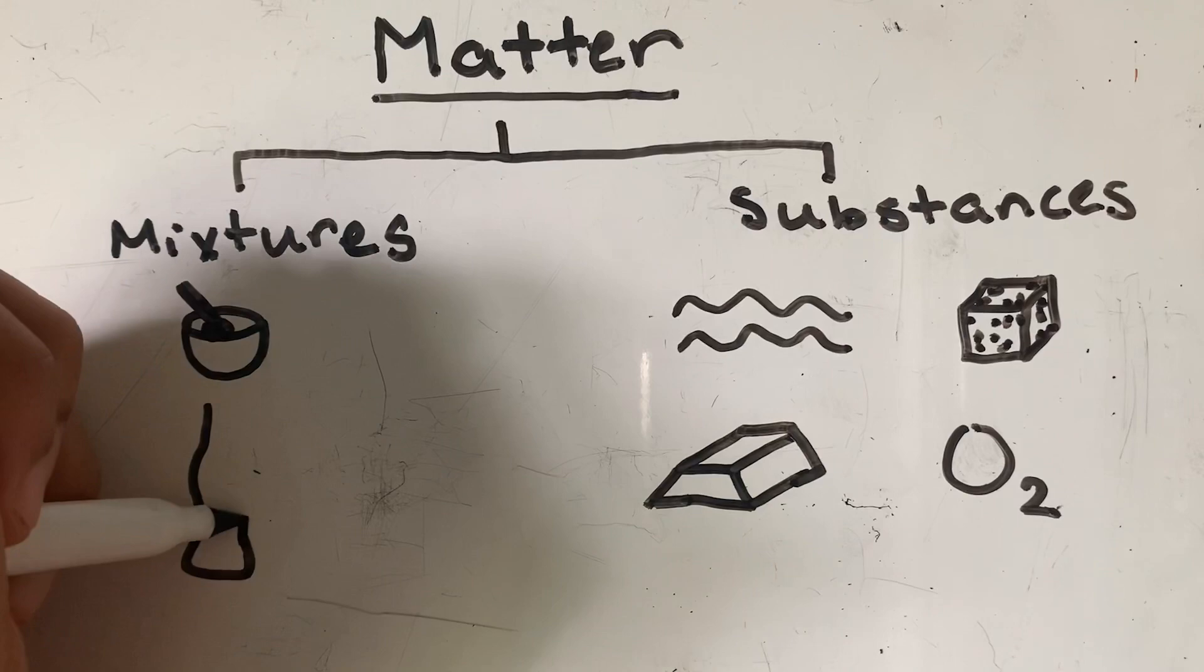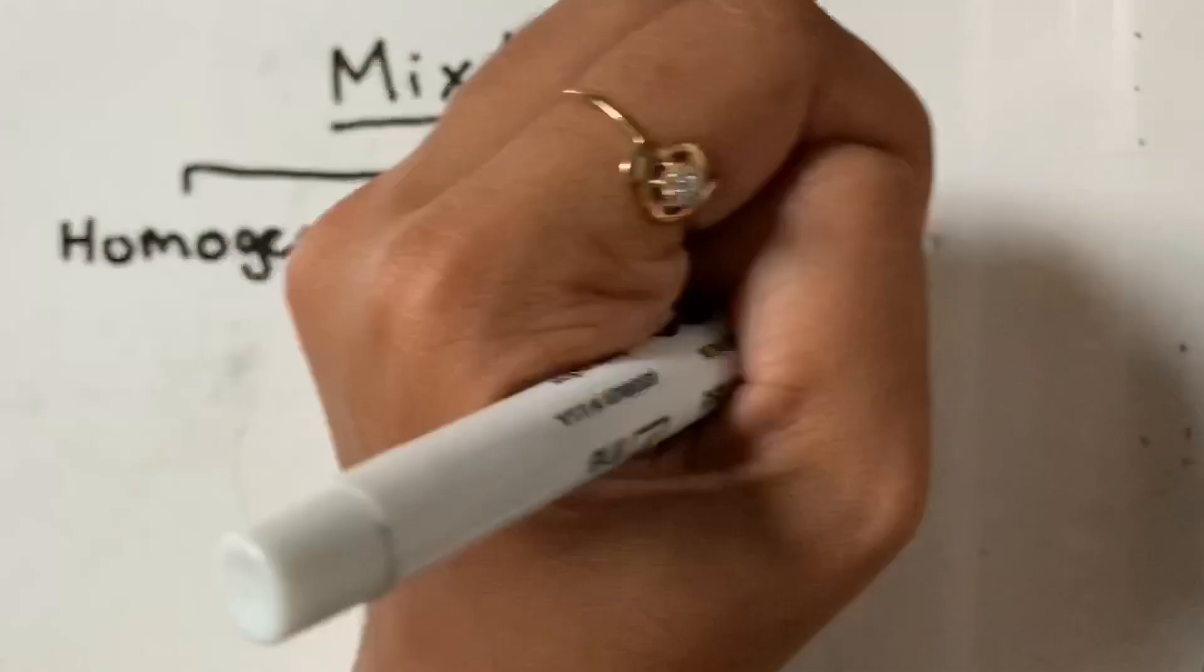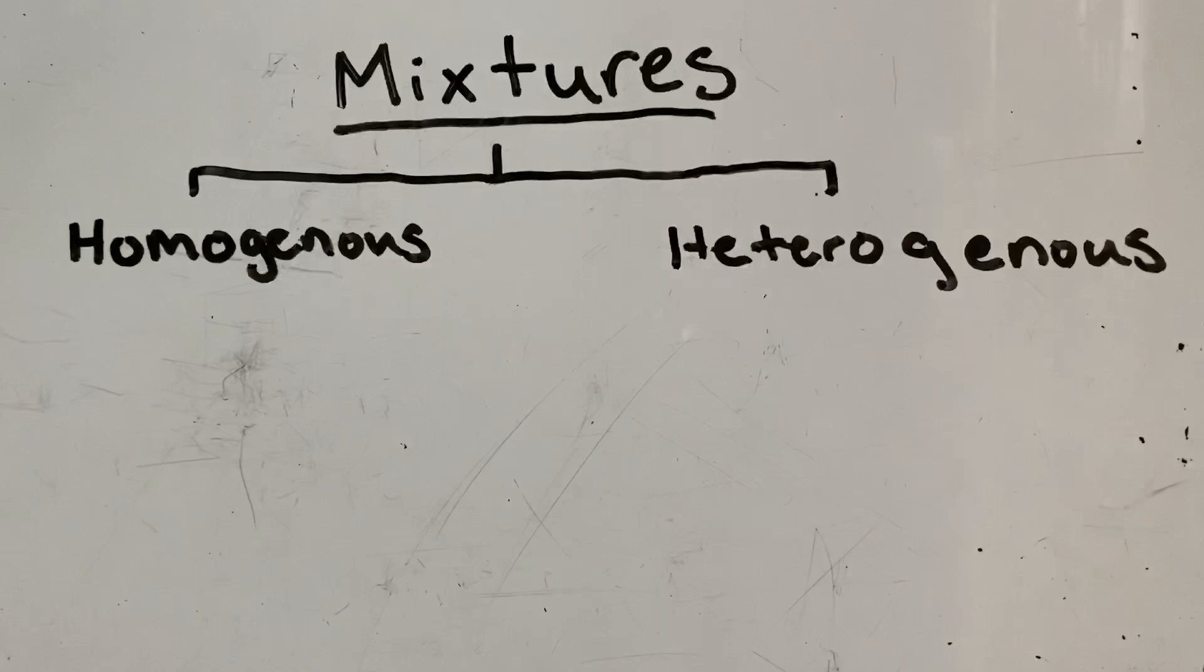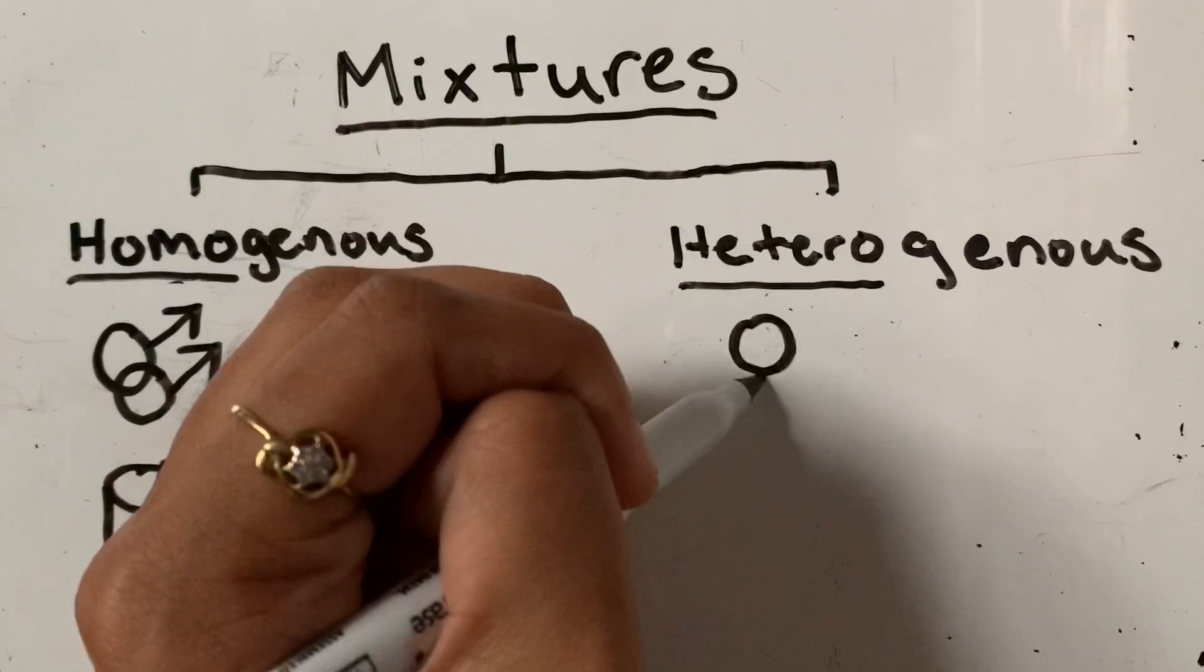Mixtures can be separated into substances by physical methods. Mixtures could be homogeneous or heterogeneous. Homogeneous, as the name suggests, homo means the same kind or the same composition throughout. For example, sugar dissolved in milk. On the other hand, heterogeneous, as the name suggests, hetero means different. So every sample could have its different composition like iron filings and sand mixed together.